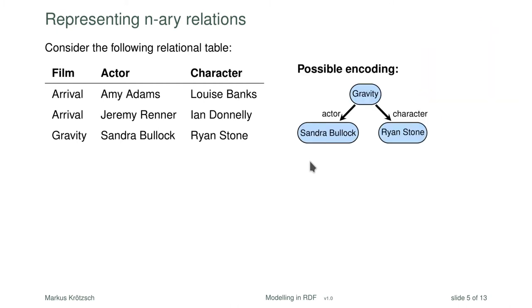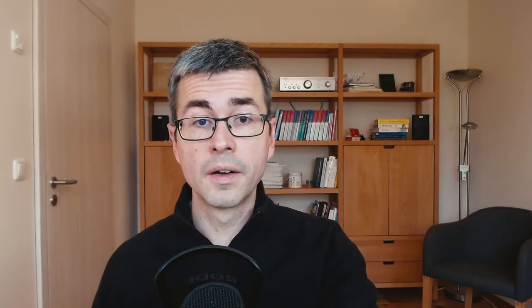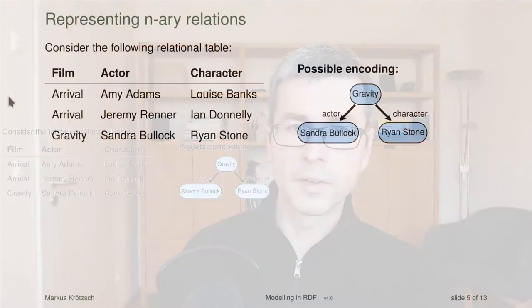It's actually not very difficult. The idea is that you simply turn the different columns into properties. I present a sketch here — clearly not a formal RDF graph with full IRIs, just abbreviated labels, but this could be the structure. I have the film Gravity, and this film has actress Sandra Bullock and character Ryan Stone. So I have associated these parts to the film. Does that look all right? Let's think about this for a moment.